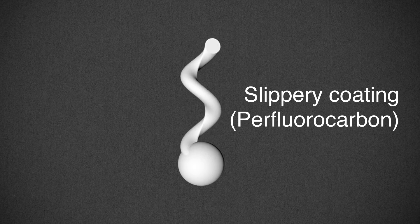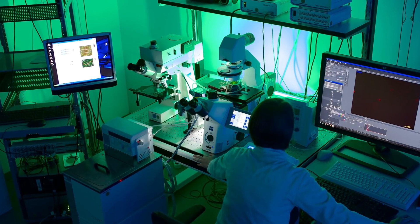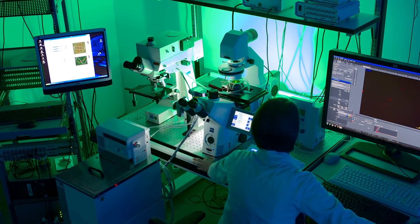The spiral bots also contained magnetic material, which meant the researchers could drive them forward, backward, left, or right with a magnetic field.